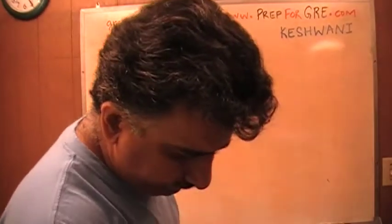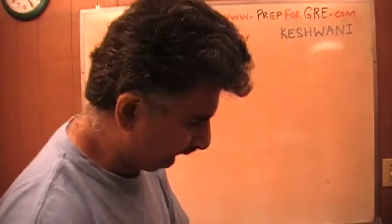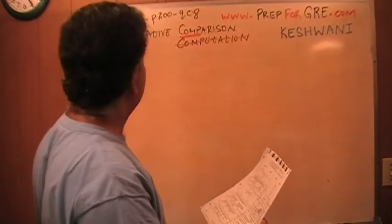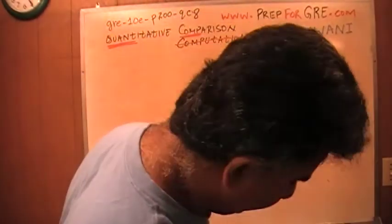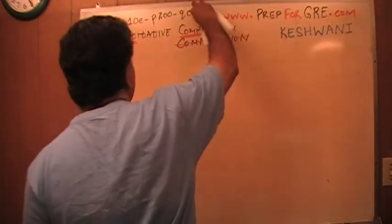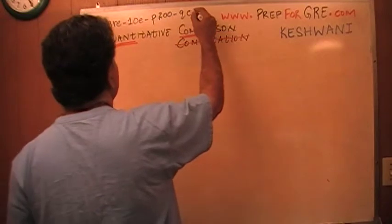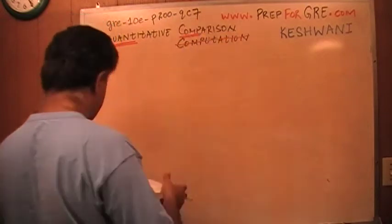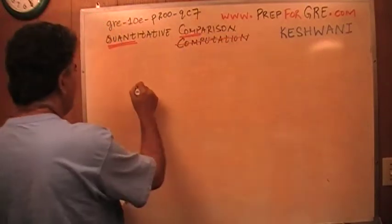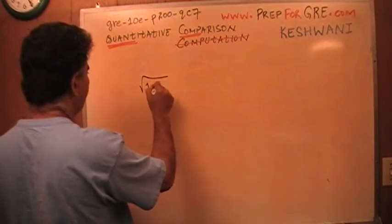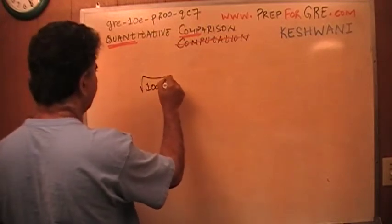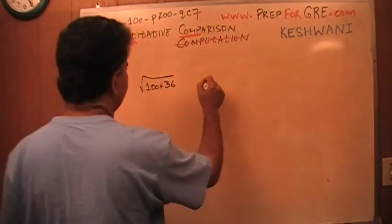Let's take a look at it. What was it, number 7? Sorry, it was number 7. This is the one I'm about to do. Square root of 100 plus 36 versus 16.